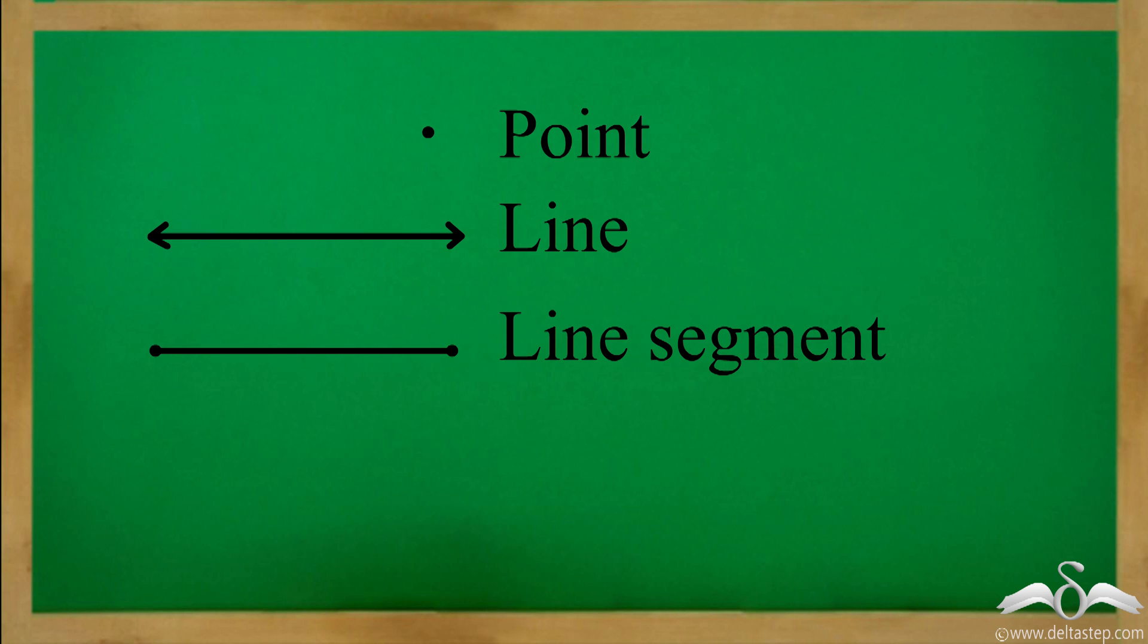So, a point is the almost invisible tiny dot. Many points come together to form a line, which is a straight path that extends forever in both directions. A line segment is a part of a line and has two distinct endpoints. A ray starts from one point and goes endlessly in one direction.